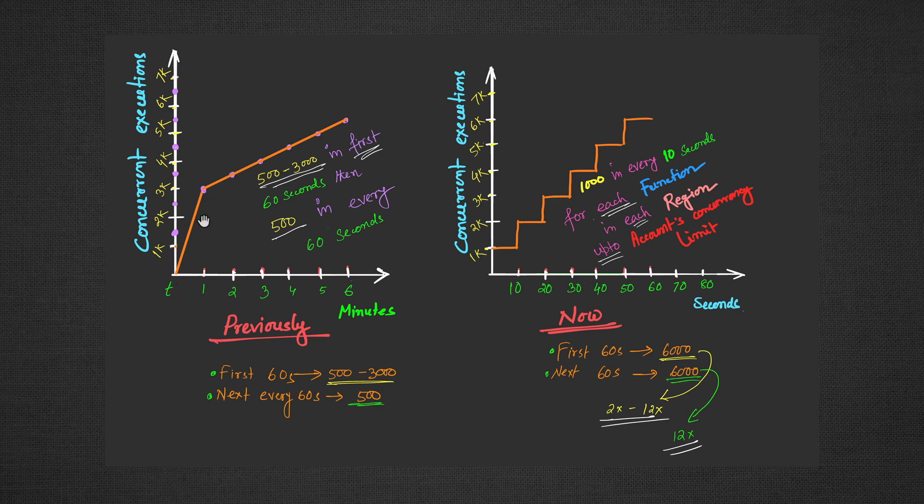the previous rate was 500 to 3000 concurrent executions in the first 60 seconds, now it is 6000. This means it is 2 to 12 times faster in the first 60 seconds.